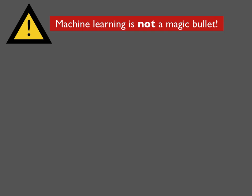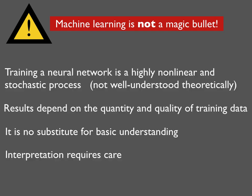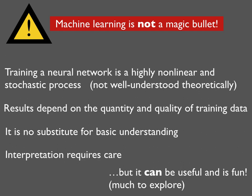Having said all this, you should realize that machine learning is not a magic bullet. The training of a neural network is a highly nonlinear and stochastic process — not at all well understood theoretically, even though people are working on that. The results depend very heavily on the quantity and quality of training data. Even if the network works really well, having the network is no substitute for basic understanding of the physical phenomenon. And if you try to figure out what the neural network does, interpretation requires care and effort. Nevertheless, neural networks can be very powerful and it can be fun to explore what they can do.